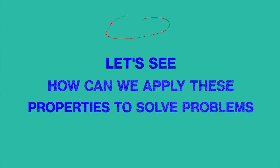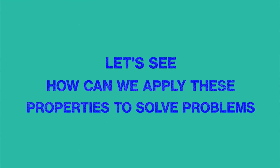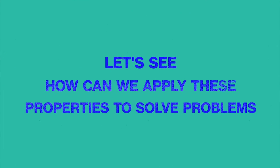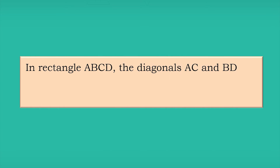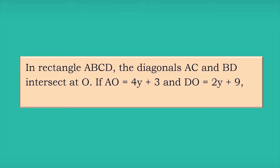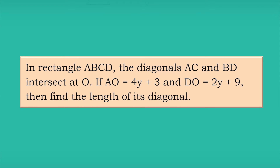Let's see how we can apply these properties to solve problems. In rectangle ABCD, the diagonals AC and BD intersect at O. If AO equals 4y + 3 and DO equals 2y + 9, find the length of its diagonal.